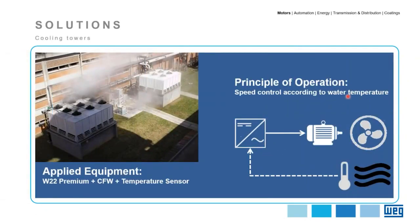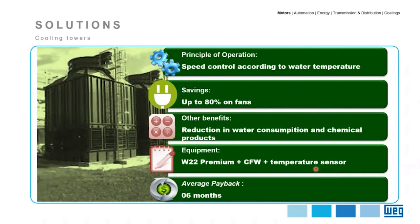Giving more details about the cooling tower case: the main equipment supplied was a VAG high efficiency motor plus a VAG VSD connected to a pressure sensor. The principle of operation is to control the fan speed according to the required water temperature. The implementation is quite simple, but the savings achieved just by varying the speed of the motor are quite high. In this case, we achieved 80% savings on the fan, with additional benefits such as reduction in water and chemical product consumption. The average payback for this investment was about six months.